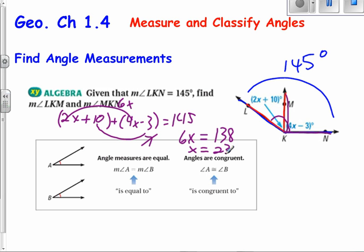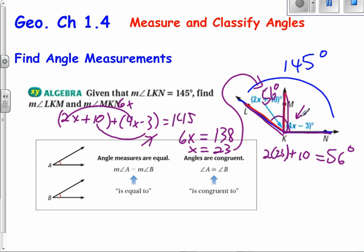Now that I have the X value, I can plug that back in to actually find what LKM is. So let's plug that 23 back into this. And I have 2 times 23 plus the 10 is going to be equal to 46, 56 plus the 10 is 56 degrees. So I know this is 56 degrees. So then you have two options. You can plug the 23 back into that X and solve for the measure of MKN, or you can just say 145 degrees, take away the 56, and you can actually solve that angle.